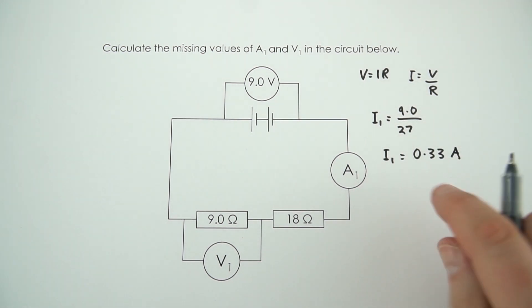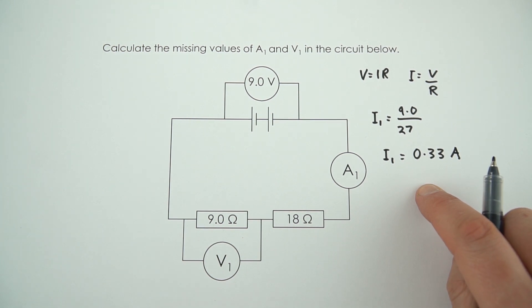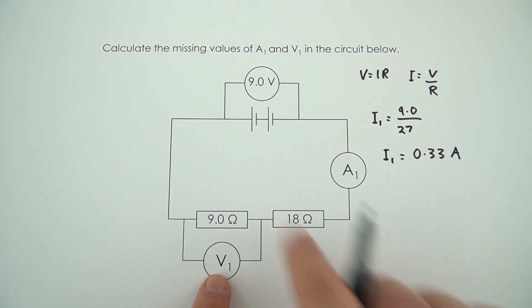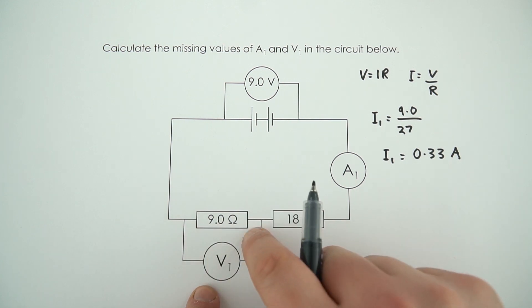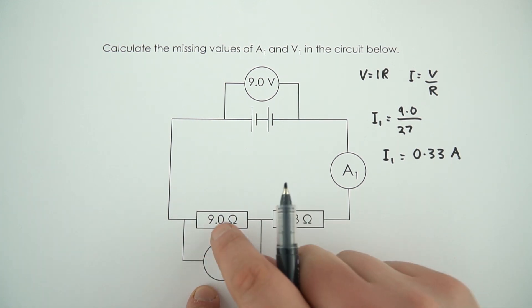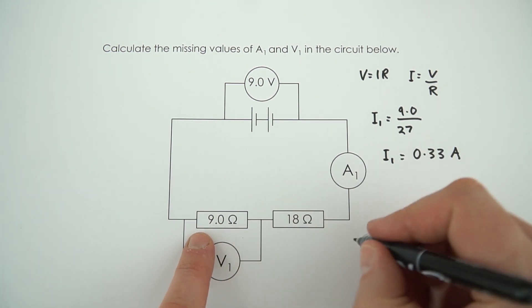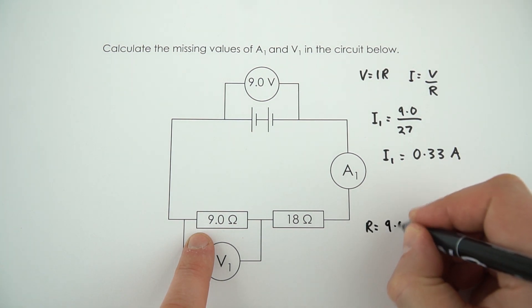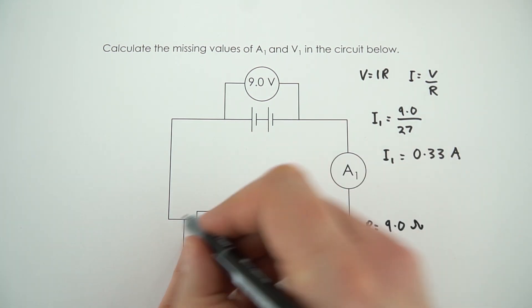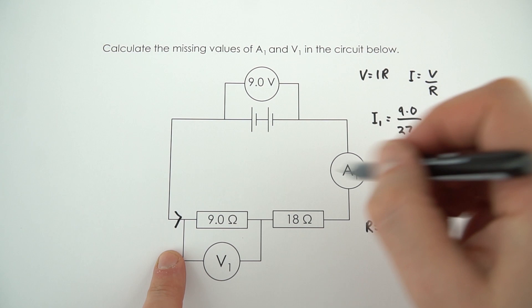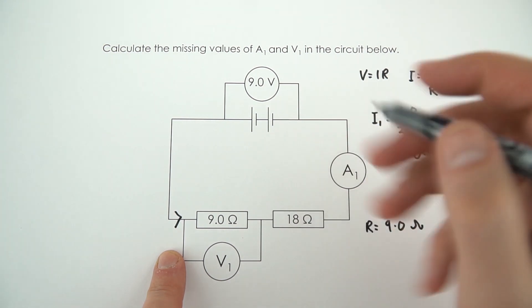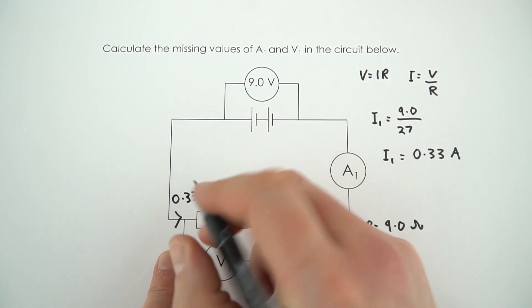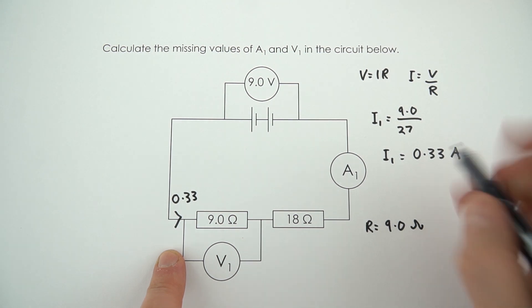So that's the first part. The second thing is we need to work out the value of V1. I'm going to consider just this resistor. For this resistor, we know that the resistance is equal to 9.0 ohms. We also know that the current flowing through it, which is going to be the same everywhere in the circuit, is 0.33 amps, which is what we worked out over here.